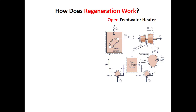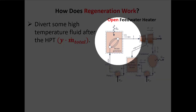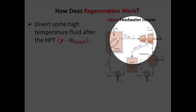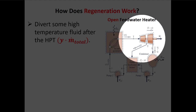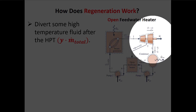How does regeneration work? We're going to take our Rankine cycle and make it more complicated to improve thermal efficiency. We have a steam generator and high-pressure, high-enthalpy steam that enters the first stage, or the high pressure stage, of our turbine. As we go through this high pressure stage, this is where we extract most of the power.